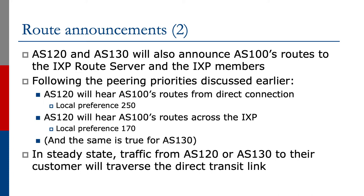AS120 will hear AS100's routes from the direct connection and set local preference 250. AS120 will hear AS100's routes across the Exchange Point and set local preference 170. As we set earlier, higher priority is given to direct BGP customer routes over the same routes heard from across an Exchange Point or the transit link. AS130 will do exactly the same thing. In steady state, traffic from AS120 or AS130 to their customer will traverse the direct transit link.